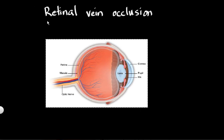Why do we care about retinal vein occlusions? Retinal vein occlusions are one of the most common retinal diseases, affecting about one million Americans. So it is something that is out there, and a lot of patients have to deal with retinal vein occlusions.